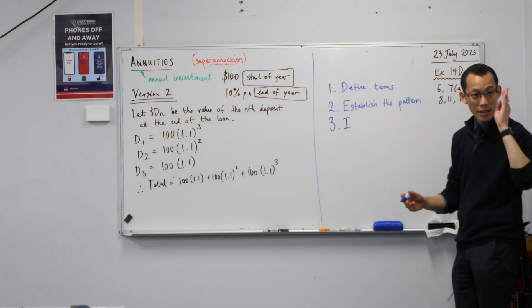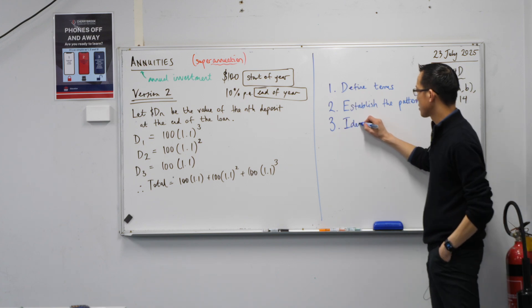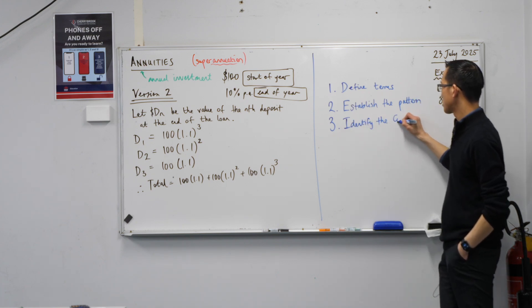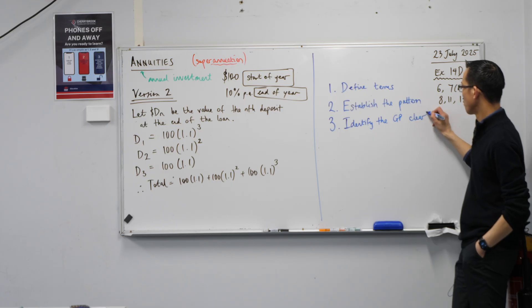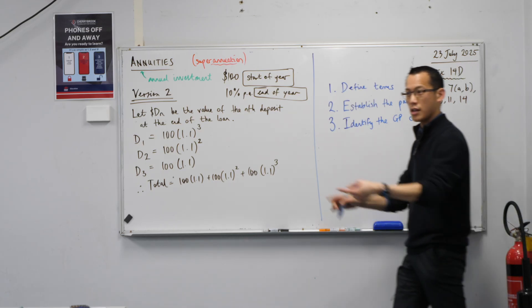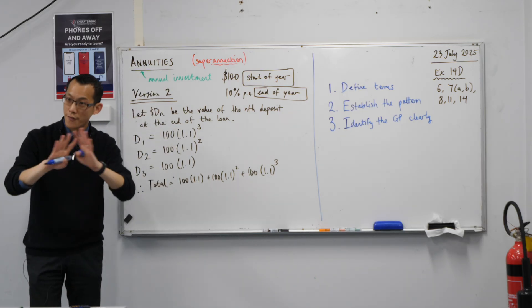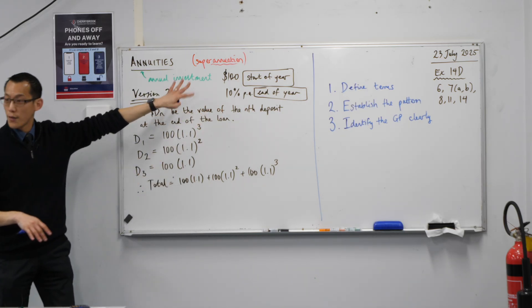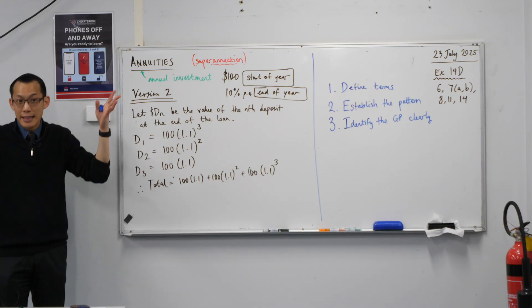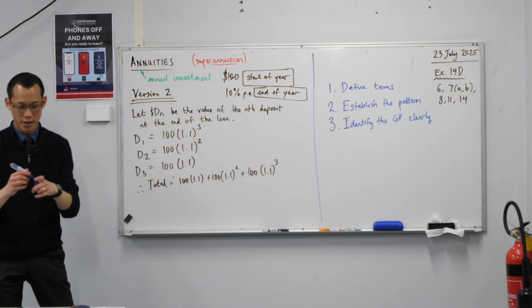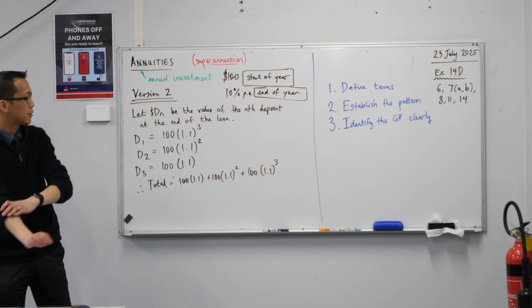And then, speaking of GP, the last thing you must do is you must identify that GP clearly. You must write all the terms in such a way that you can see what a is, the first term, you can see the ratio, you can see the number of terms in a very obvious way. Whether you go version one or version two, you have to do that. I literally write, this is a GP with. That's how I do my working, because I want to make it super obvious.